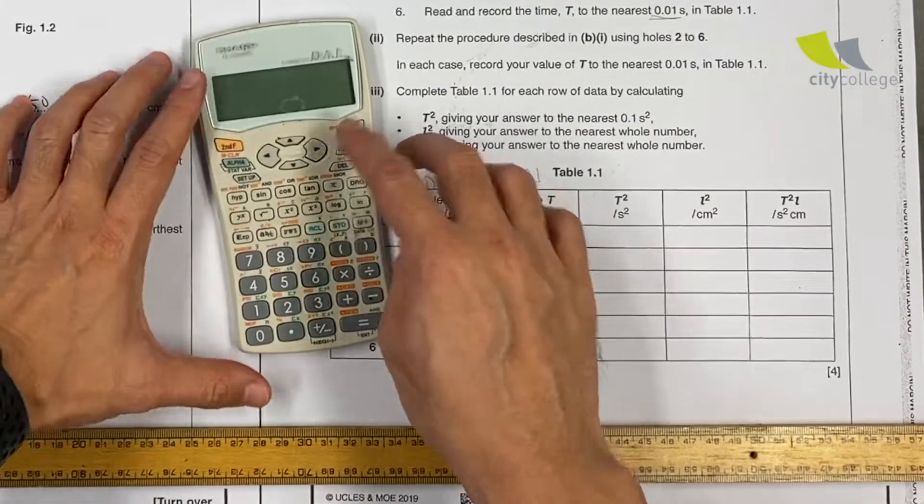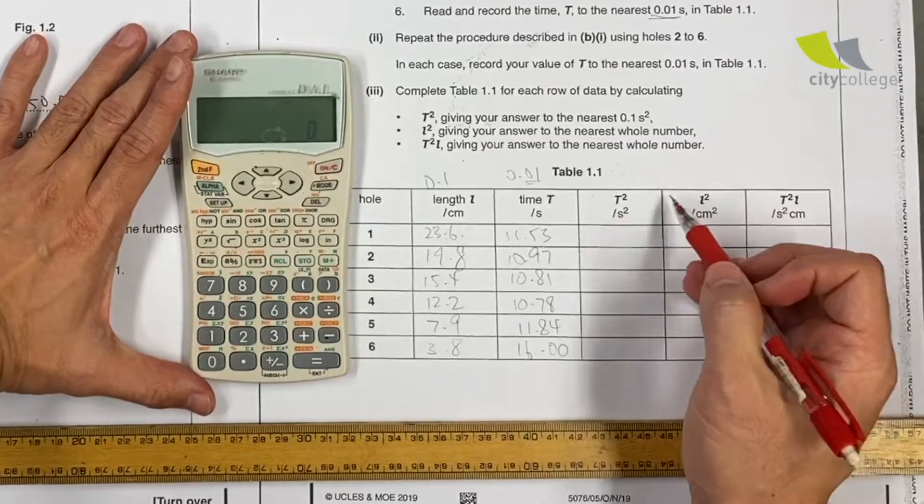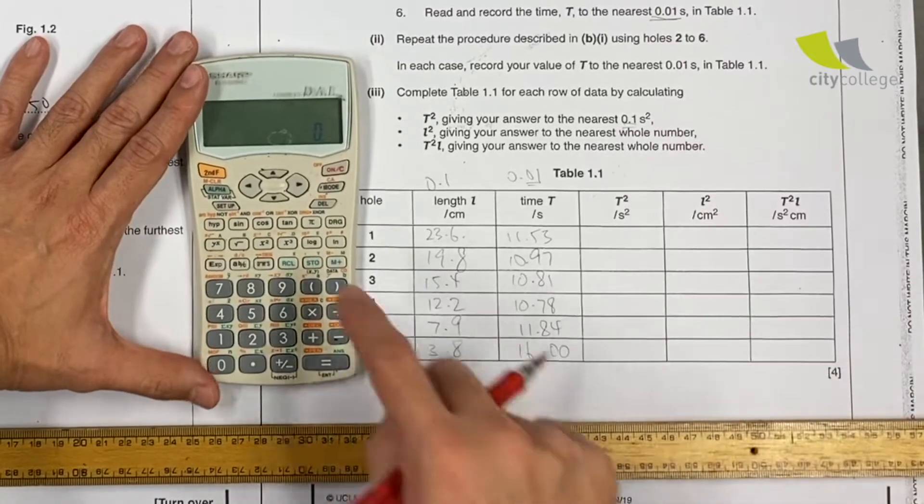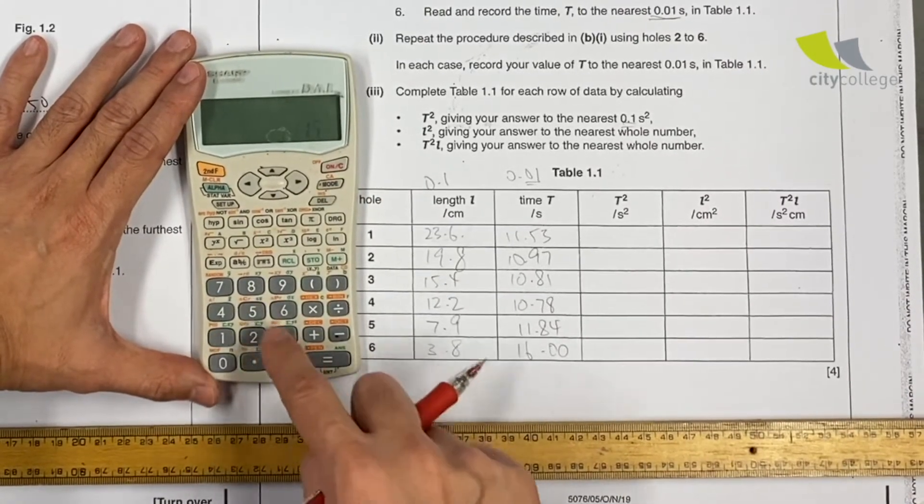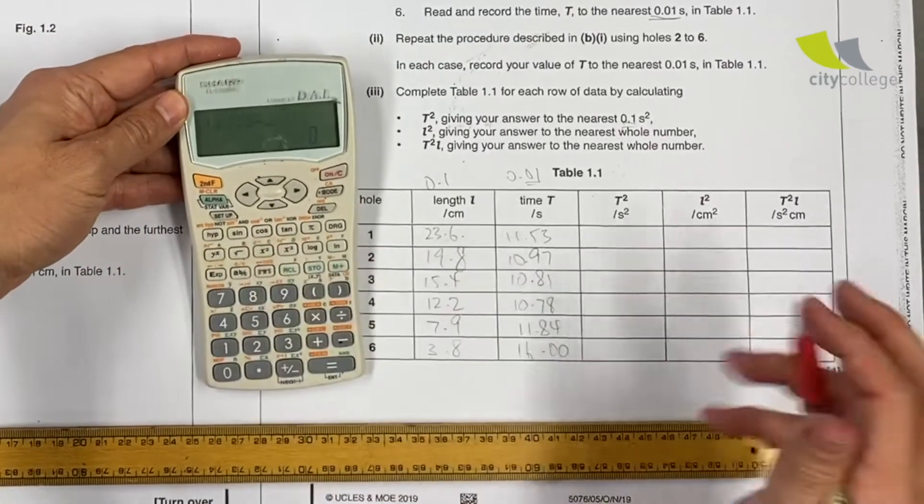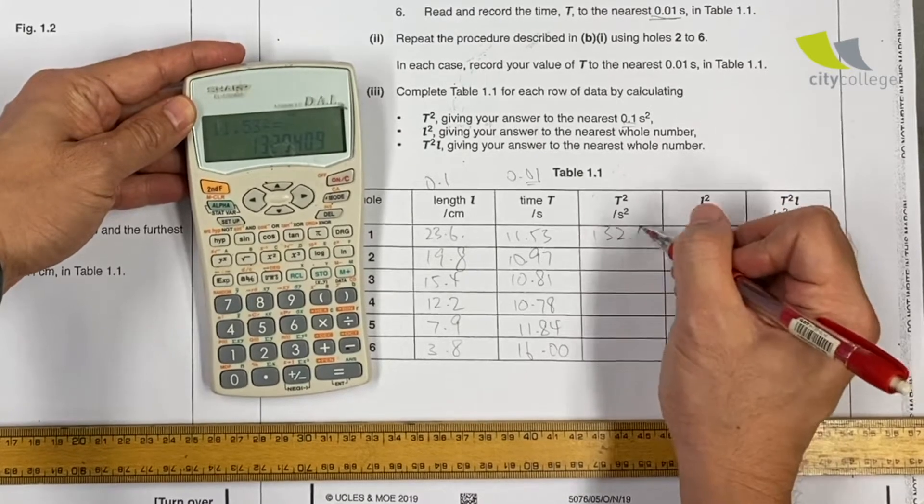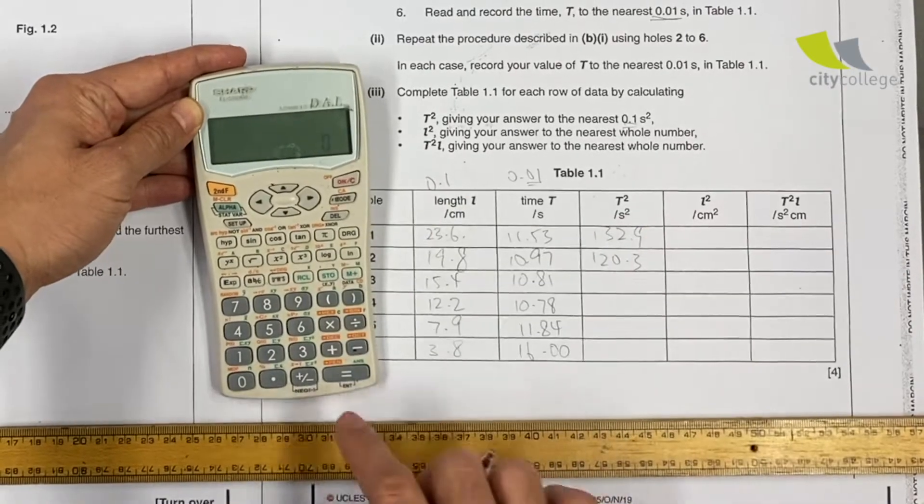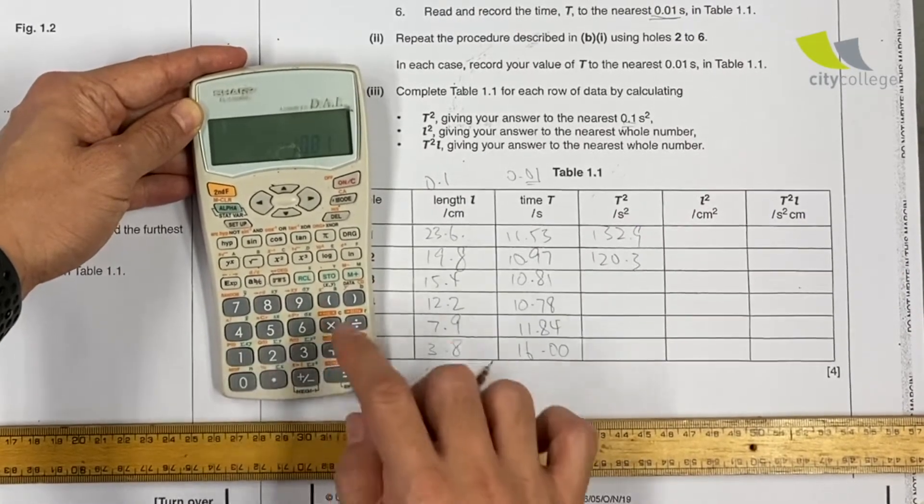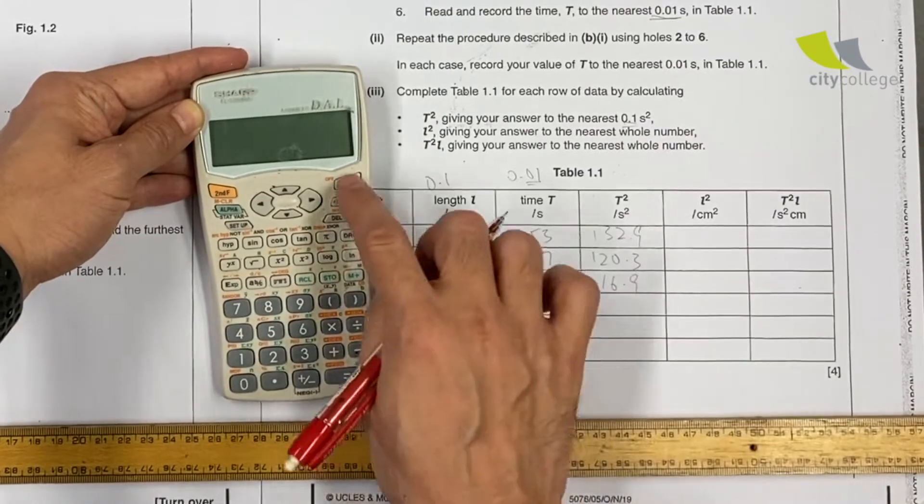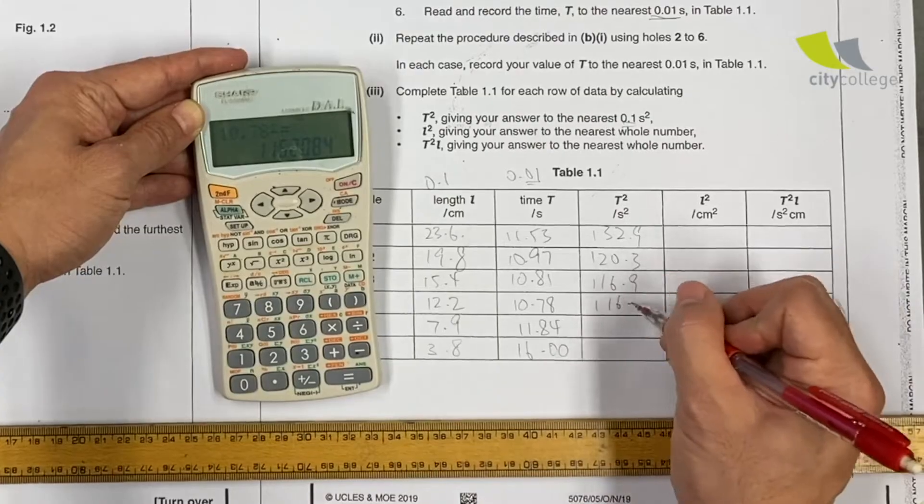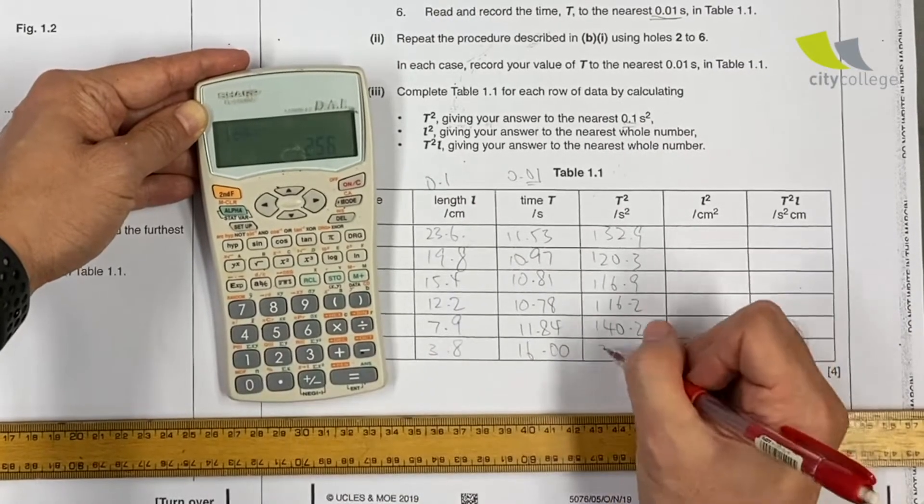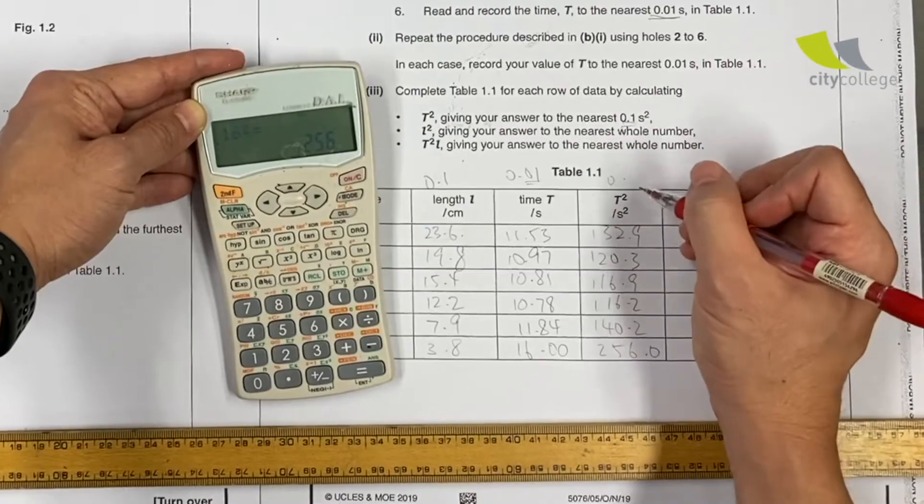For T square, I will have to give my answer to the closest 0.1. It's easy. 11.53 square is 132.9. 10.97 square is 120.3. 10.81 square is 116.9. 10.78 square is 116.2. This is the easiest part to get marks. Just make sure you punch the correct things. No excuse. You should not lose marks here. 140.2. And last one, bring it home, baby. 256.0. You're not going to get me.